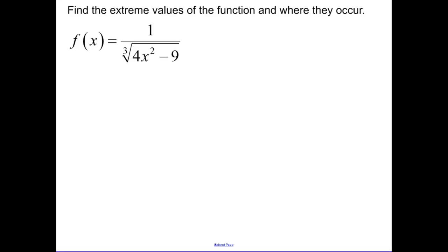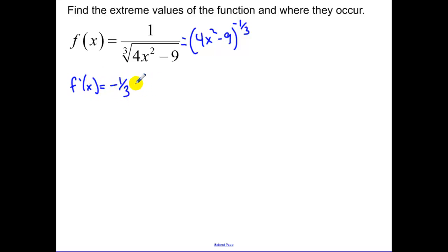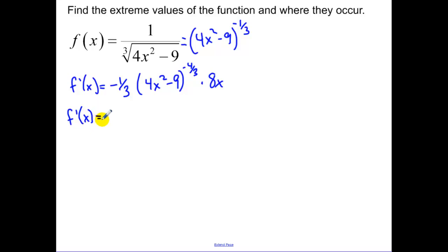The next one is a little bit more challenging because we have a function which I'm going to rewrite as 4x squared minus 9 to the negative one-third power. That just makes our derivative a little bit easier to find. Finding the derivative, I get negative one-third times (4x squared minus 9) to the negative four-thirds, times the derivative of the inside, which is 8x.